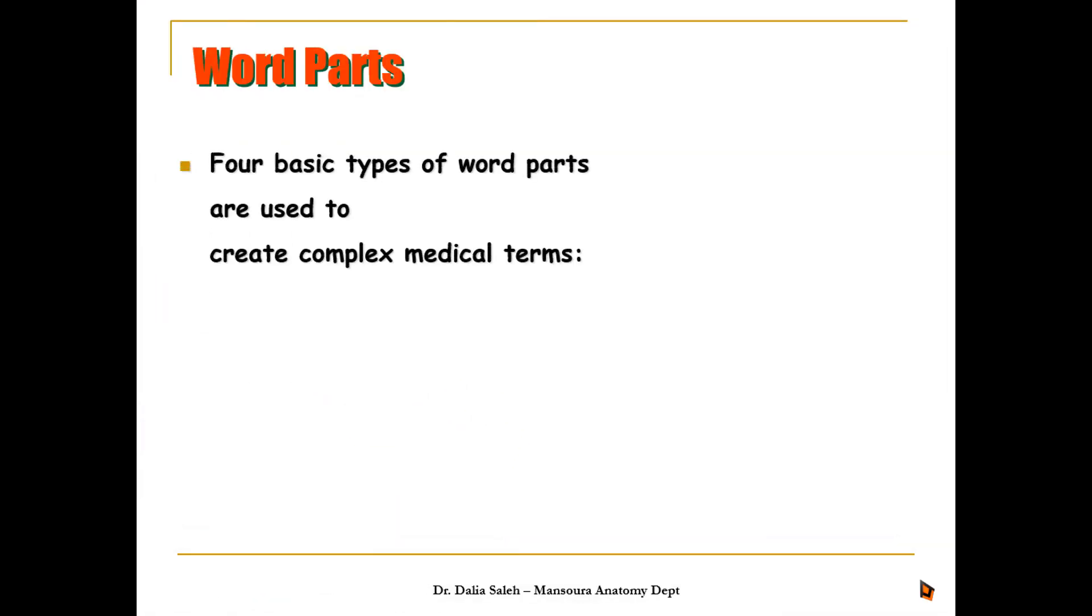Four basic types of word parts are used to create a complex medical term. We have what's called word roots, as in cardia or the heart. The word root indicates the main body part that is involved.